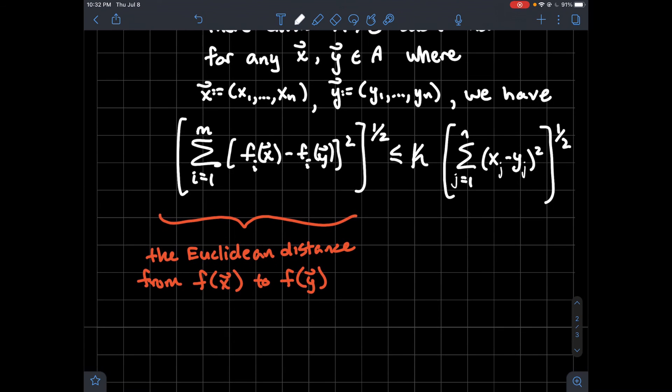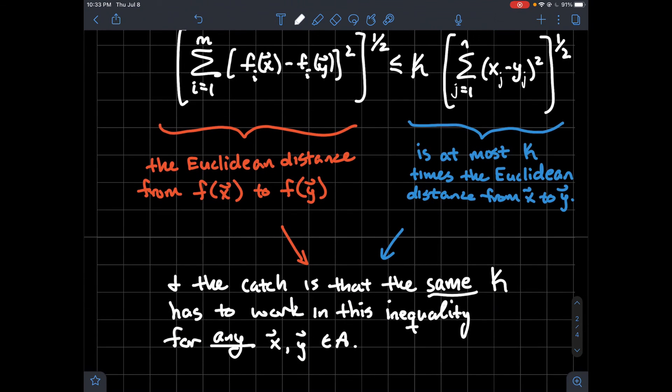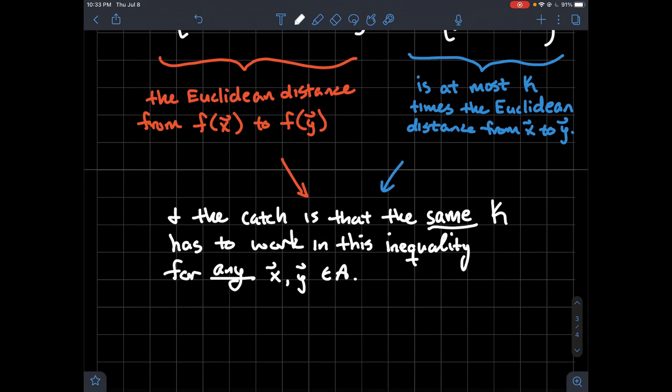To recap, on the left side I'm telling you about the Euclidean distance from the vector f of x to the vector f of y using the components of the function f. That is at most k times the Euclidean distance from x to y. It's some kind of relationship between how far the outputs are from each other and how far the inputs are from each other by some constant k. What's the catch? That k has to work for every two vectors x and y in your domain. It's got to be the same k that has to work. That's not to say there's only one k that works, but there has to exist a single constant k that works for every x and y in your domain.